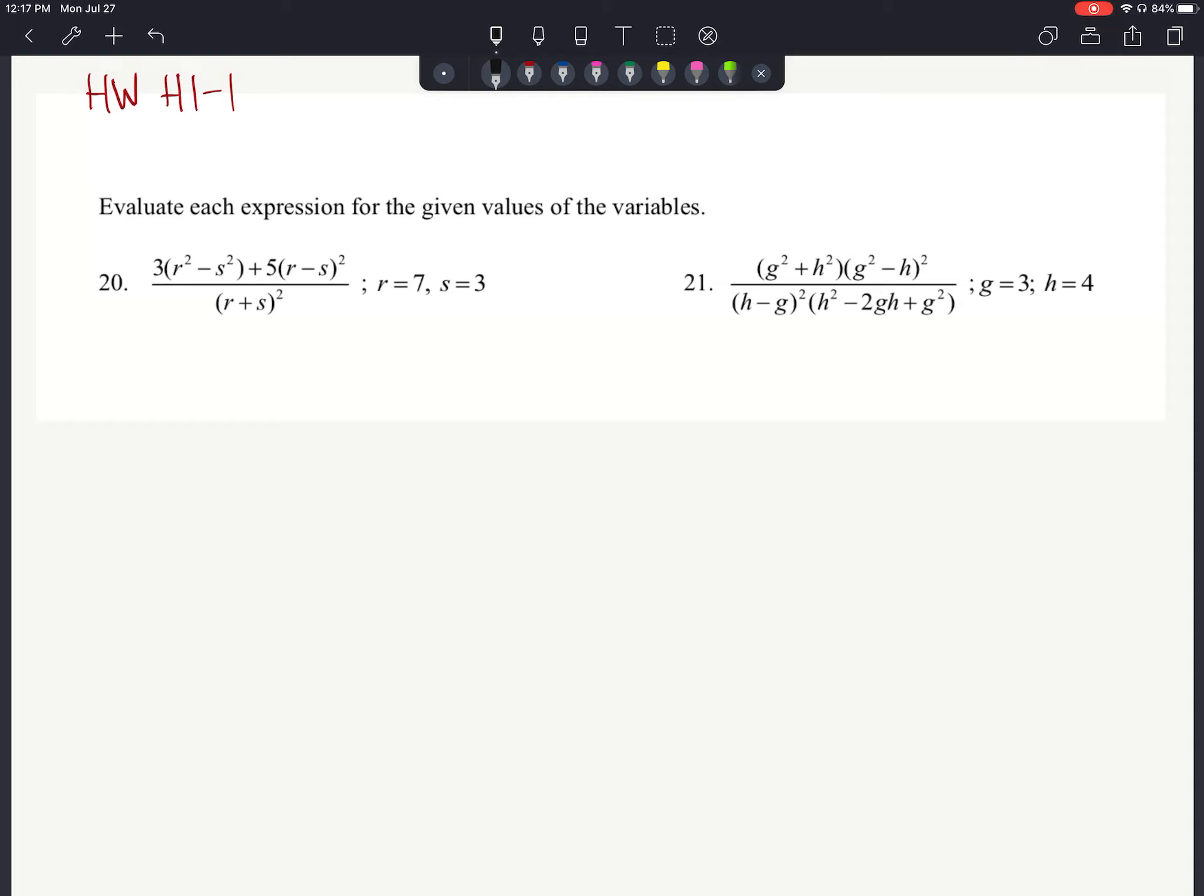Number 20, we have 3 times the quantity of r squared minus s squared, plus 5 times the quantity of r minus s, and that quantity is being squared.